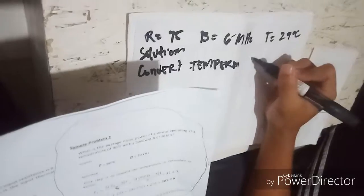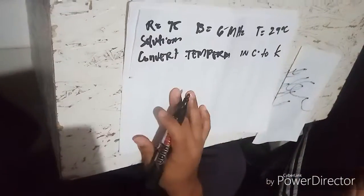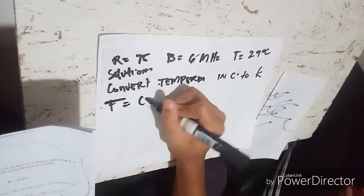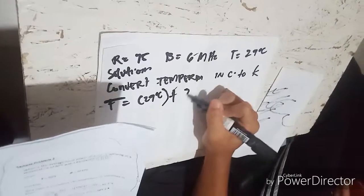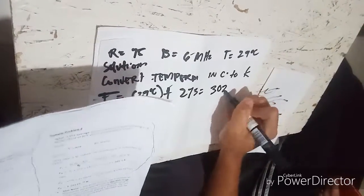Temperature is equals to 29 degrees Celsius plus 273 equals 302 Kelvin.